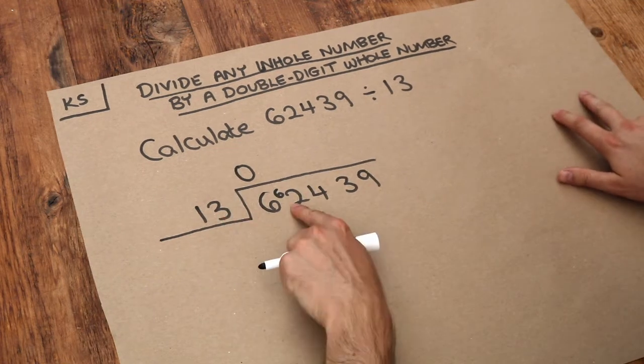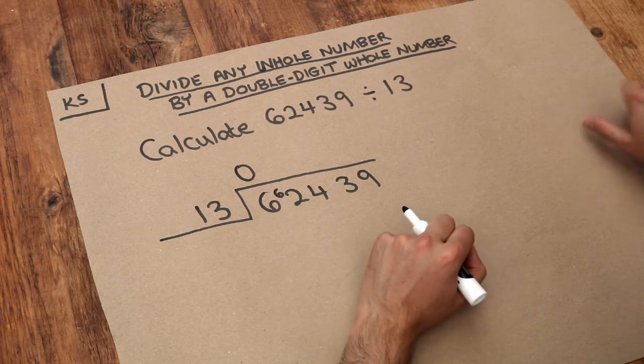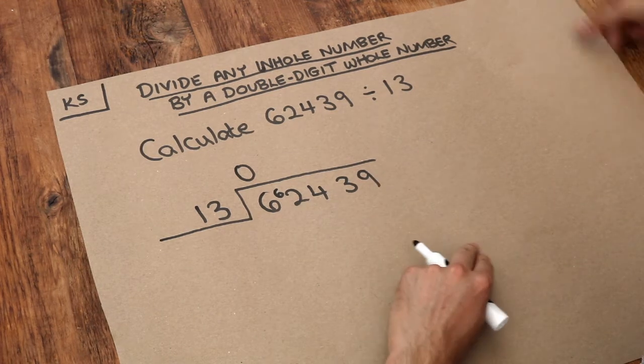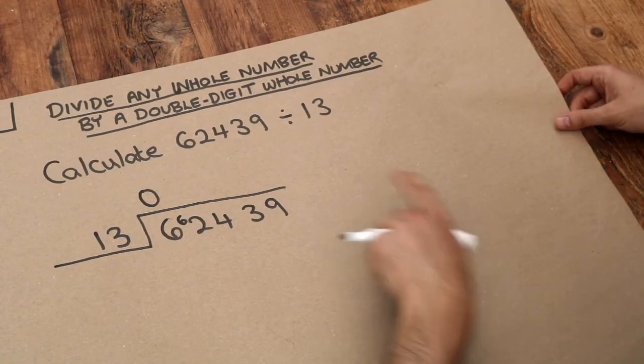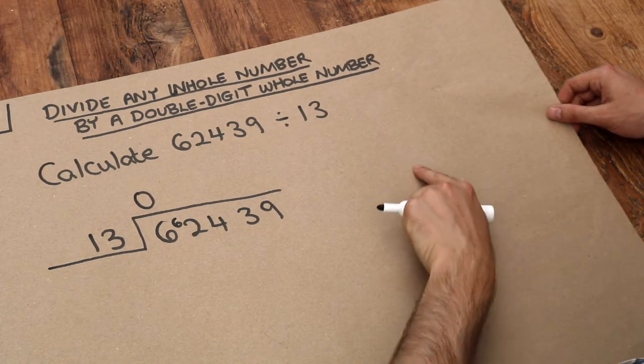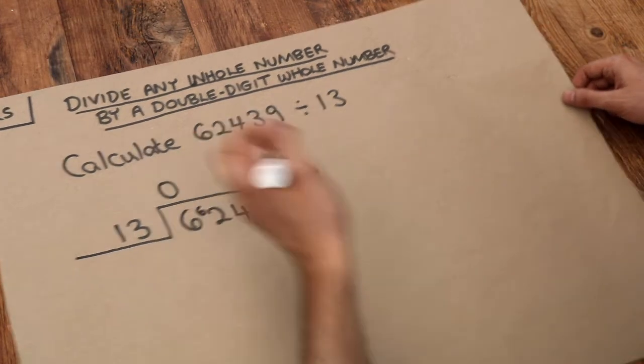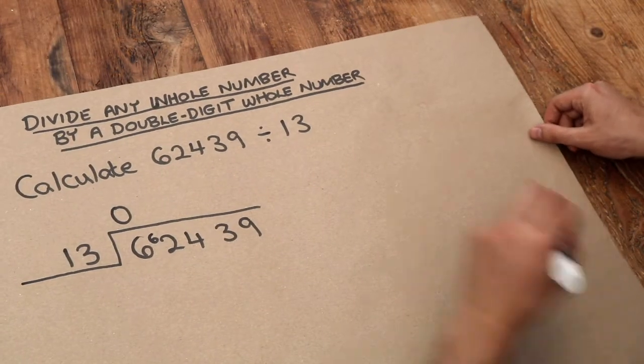But now this becomes a bit more difficult because it's hard to see how many times 13 goes into 62 in our head. And when this happens what I do is to just write out the 13 times table to the side and that helps us quickly see how many times 13 goes into 62 and so on. So let's do the 13 times table.